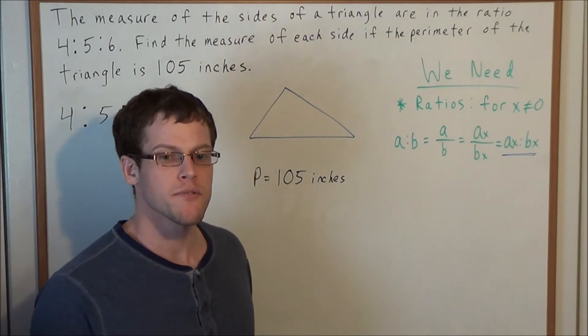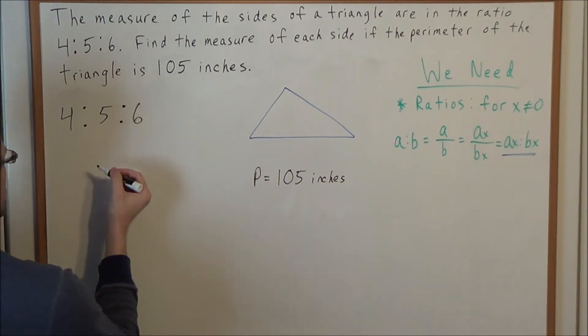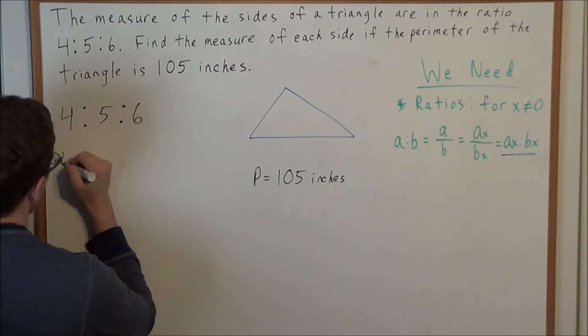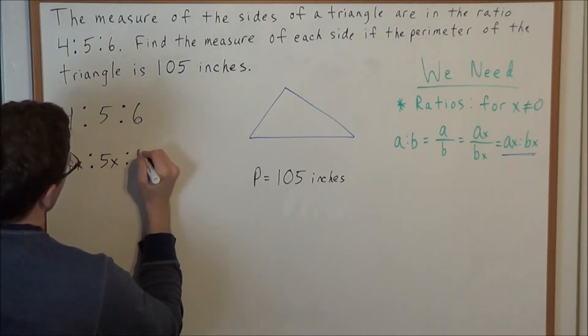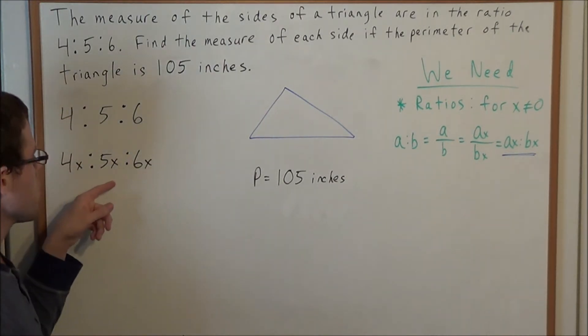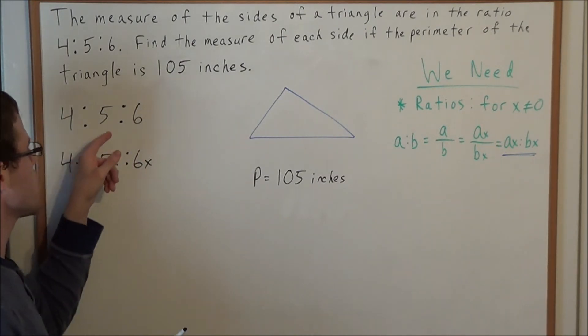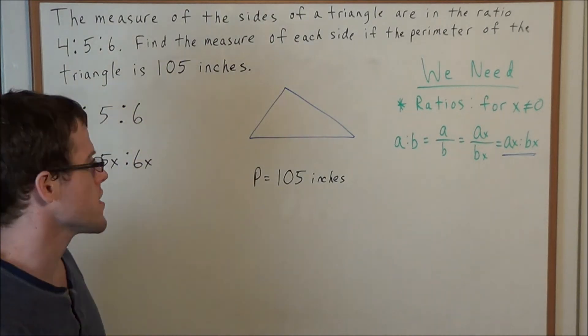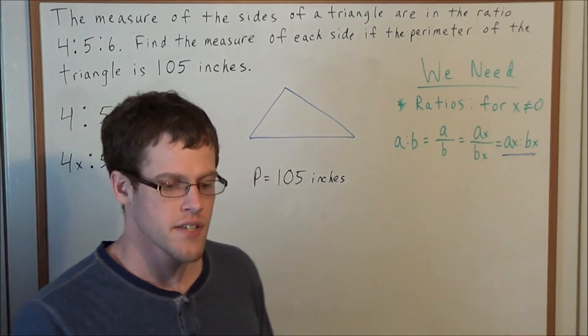How is this going to help us for this problem? If we multiply each of these terms by x, we could look at the ratio 4x to 5x to 6x. For some x value not equal to zero, this represents all the ratios that reduce back to 4 to 5 to 6. If these represent all the ratios that reduce back to 4 to 5 to 6,